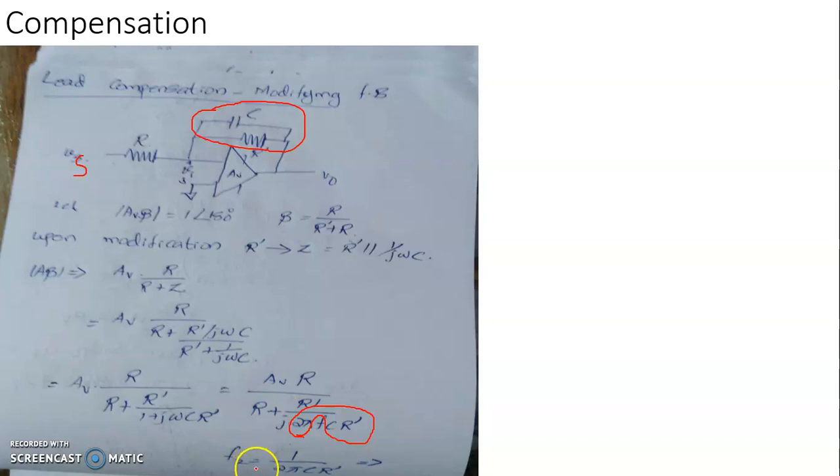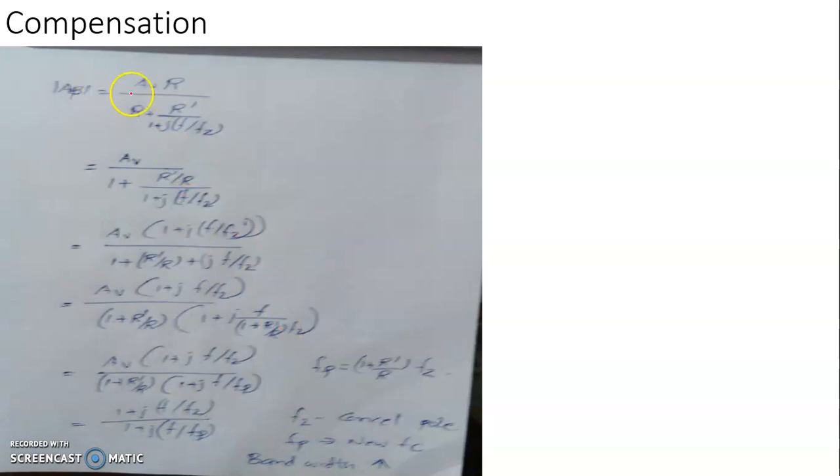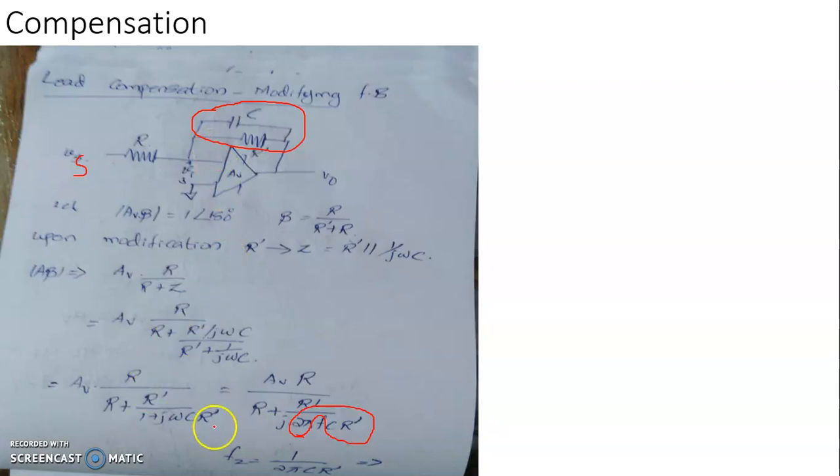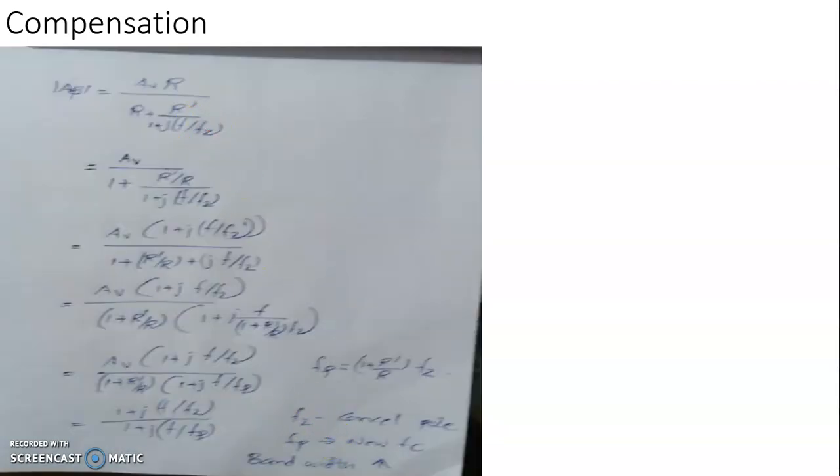We substitute Fz equal to 1 by 2πCR prime, and then this expression becomes Aβ equal to Av times R divided by R plus R prime divided by 1 plus j times F by Fz. That is equal to Av—this is the numerator.